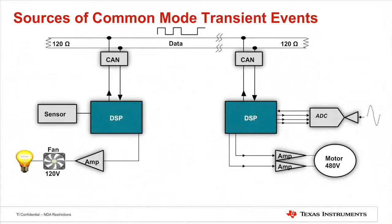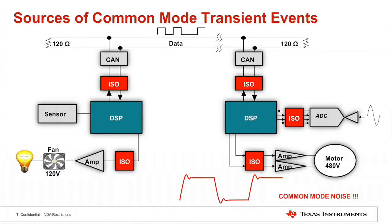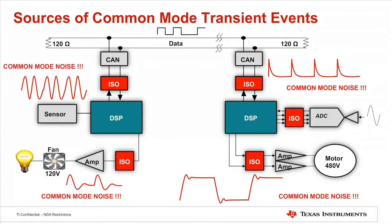CMTI is a very important specification for an isolator. Minimum and typical CMTI values are specified in our data sheets. Common mode transient events can cause error during data transmission across the isolation barrier.